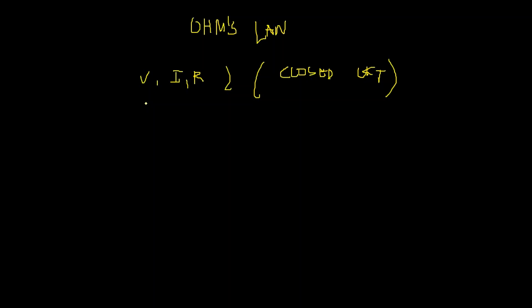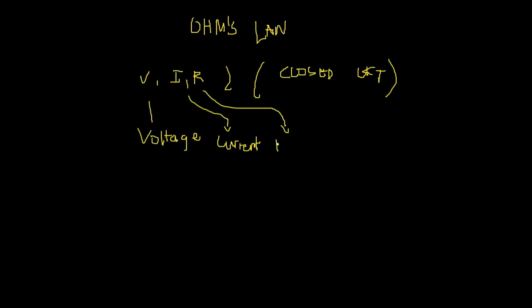So V stands for voltage, I is for current, and R is for resistance.